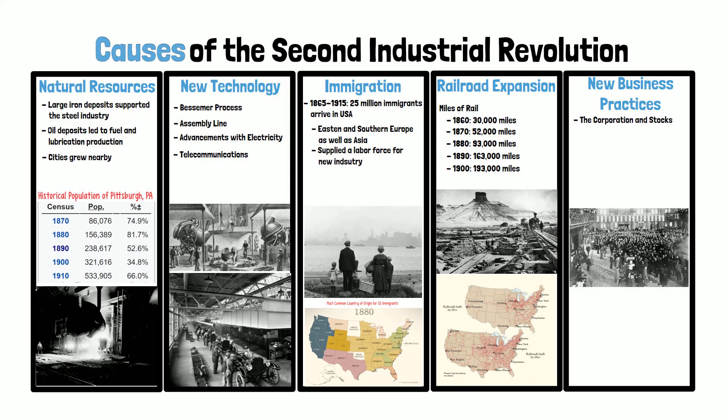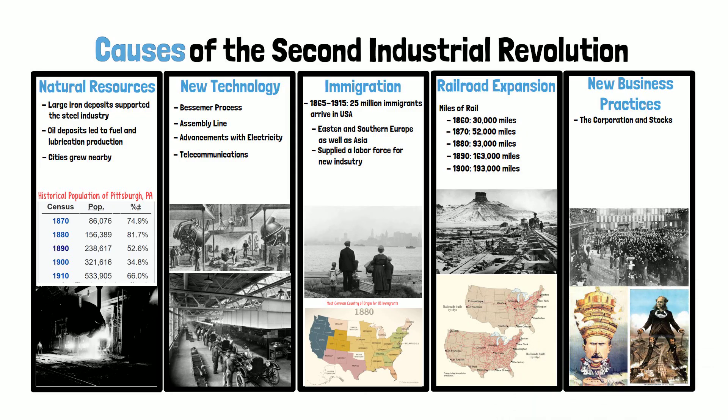Some business leaders also began to dominate certain industries. John D. Rockefeller dominated oil, Cornelius Vanderbilt dominated the railroads, and Andrew Carnegie dominated the steel industry. Each used new tactics such as vertical integration — the owning of all levels of production for their industry — and horizontal integration — the owning of all companies in their industry — to grow their wealth and power in the field of business.